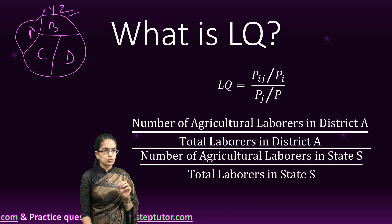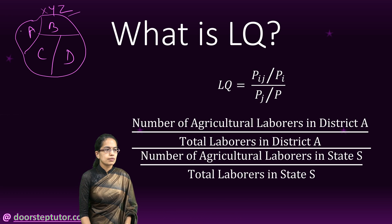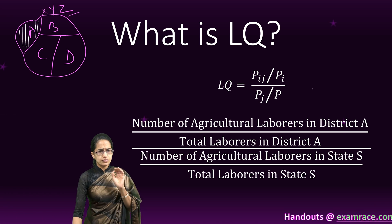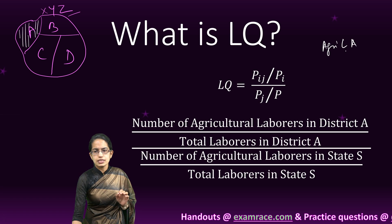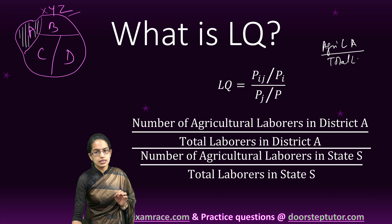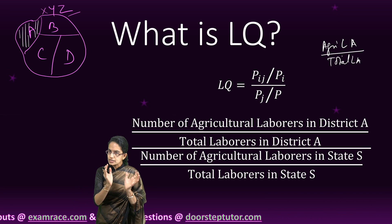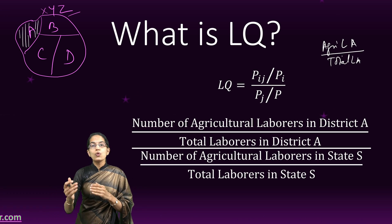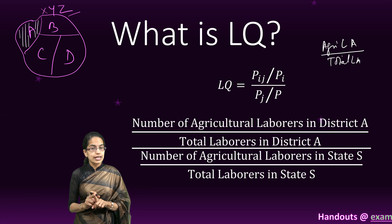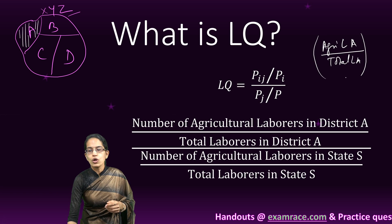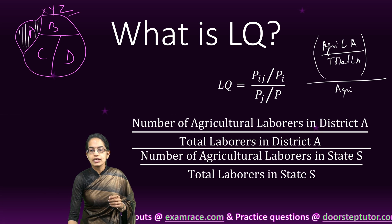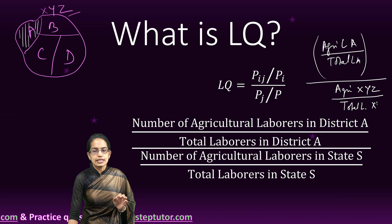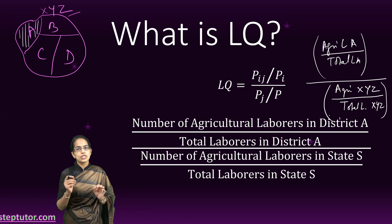What I do is I take the number of agricultural laborers in state XYZ. Then I take the agricultural laborers in district A. Agricultural laborers in district A divided by the total laborers in district A gives me the scenario just for district A. But under location quotient I also compare it to the phenomena at the state level — so I divide this by the total number of agricultural laborers in state XYZ divided by the total number of laborers in state XYZ. This gives me the location coefficient.